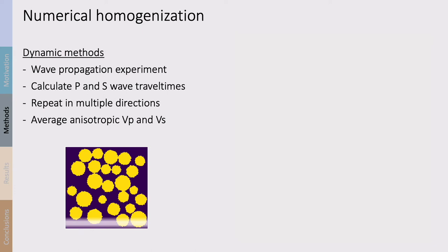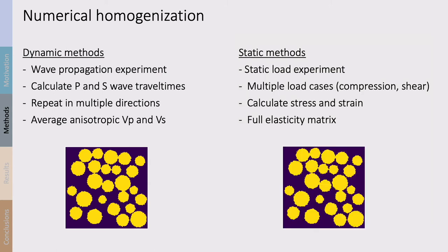There are different approaches for numerical homogenization. Dynamic methods essentially simulate a wave propagation experiment — we calculate P and S wave travel times and, by repeating this in multiple directions, determine a full representation of anisotropic VP and VS. Static methods simulate a static load experiment: we model the deformation of the sample under multiple load cases in compression and shear, and calculate stresses and strains within the sample to obtain the full elasticity matrix.